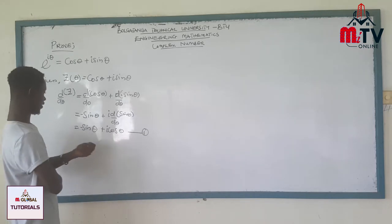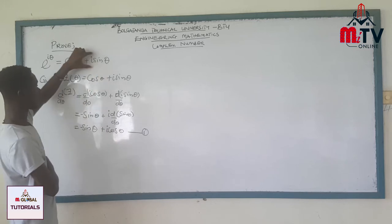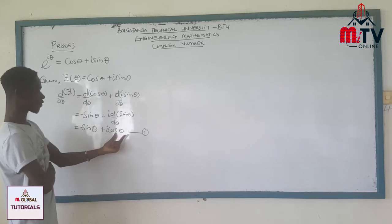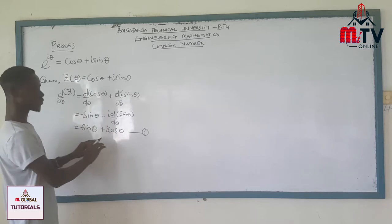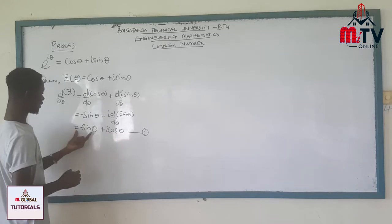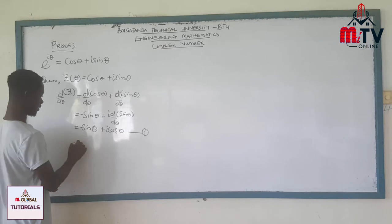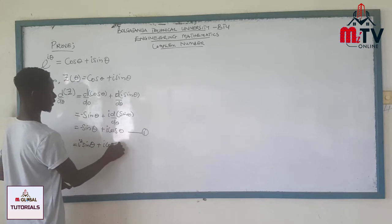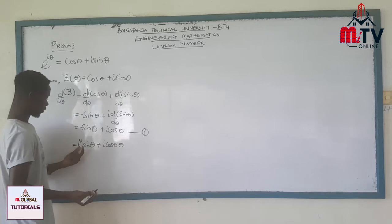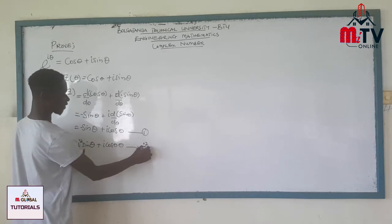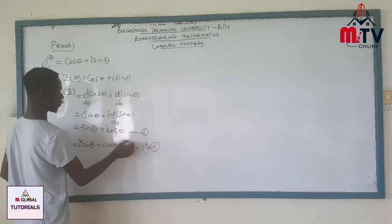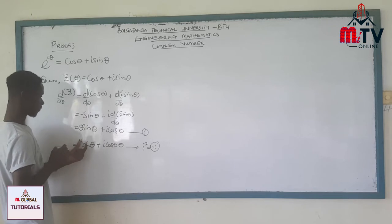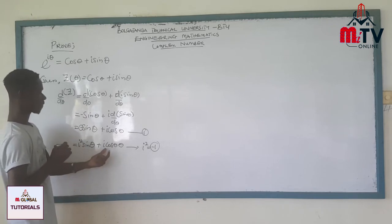When we look at this, minus sine θ doesn't directly match the form cos θ plus i sine θ. We need to eliminate the mismatch. At this point, we can rewrite negative sine θ as i² sine θ, because i² equals minus 1. So minus 1 times sine θ is the same as i² sine θ. Therefore, the derivative becomes i² sine θ plus i cos θ.